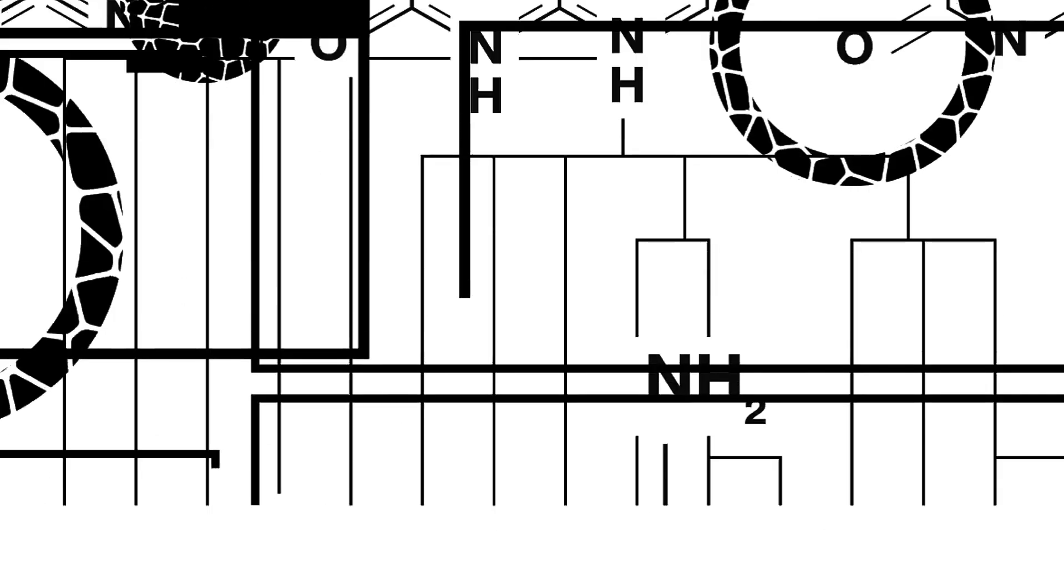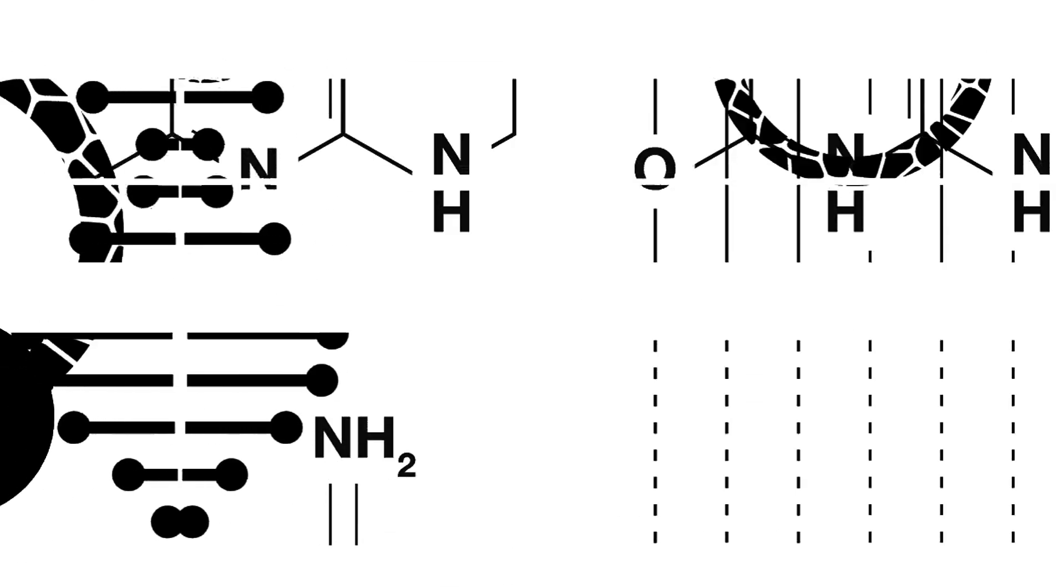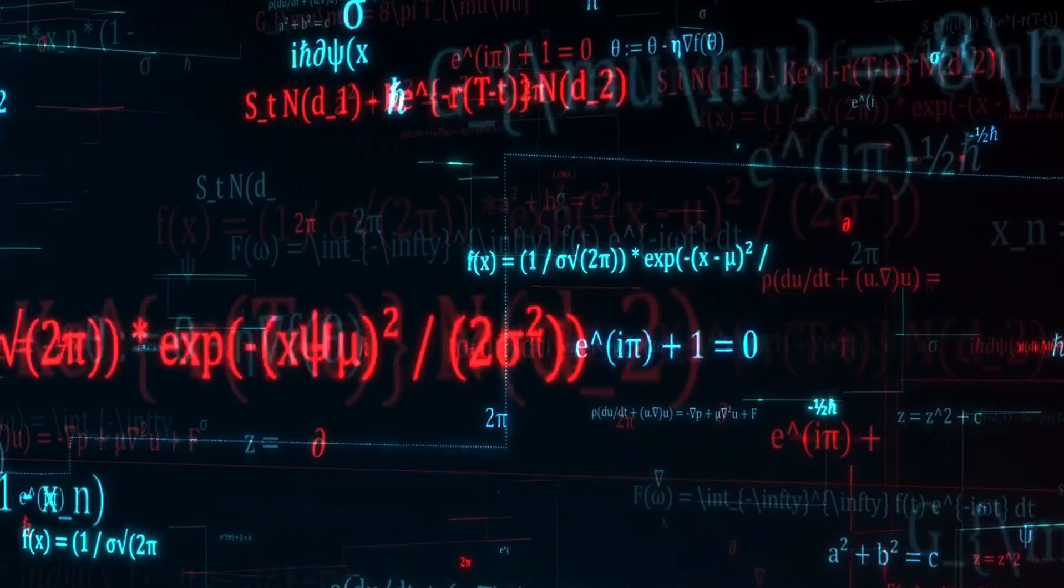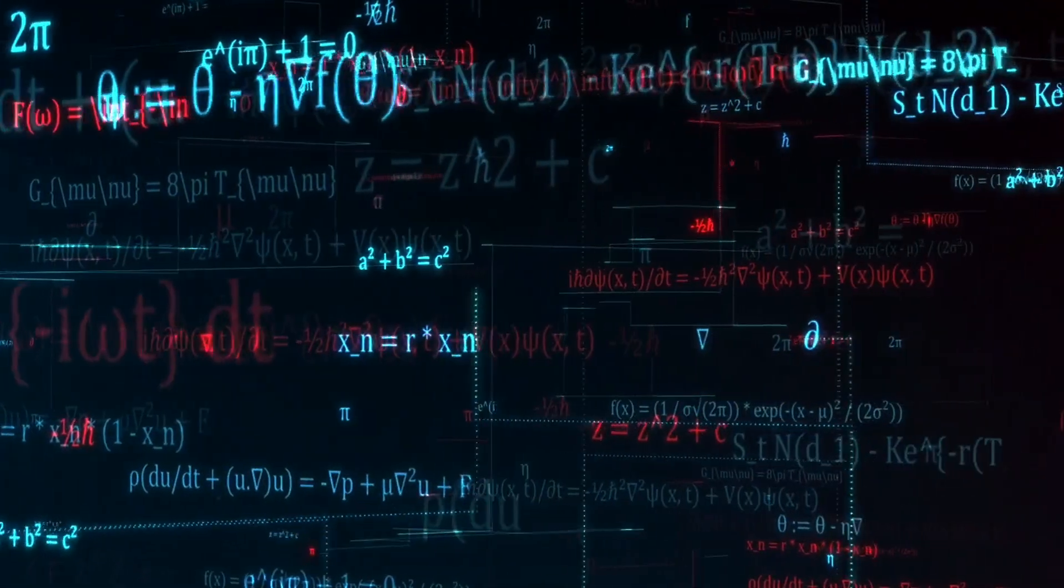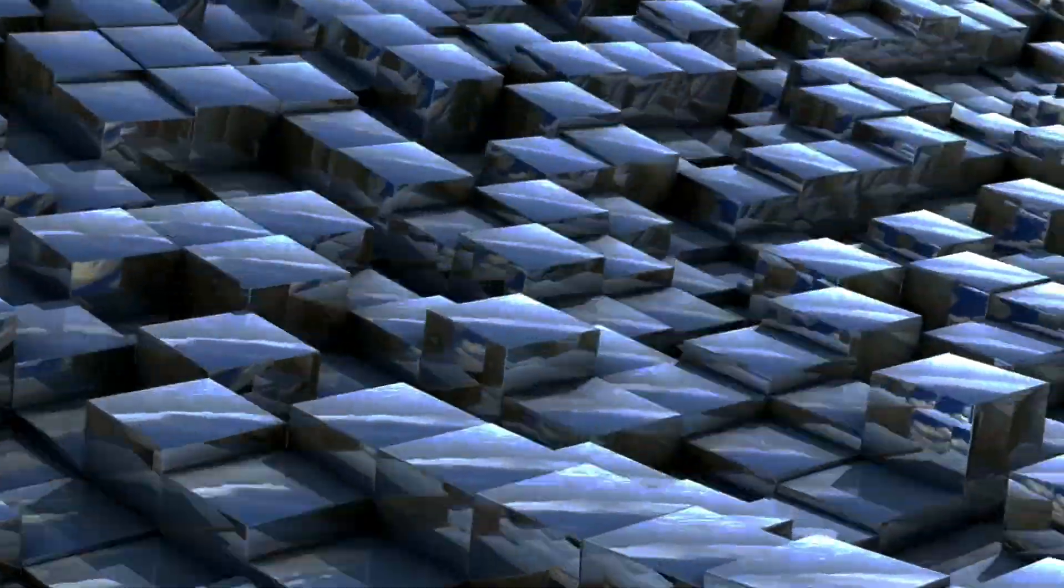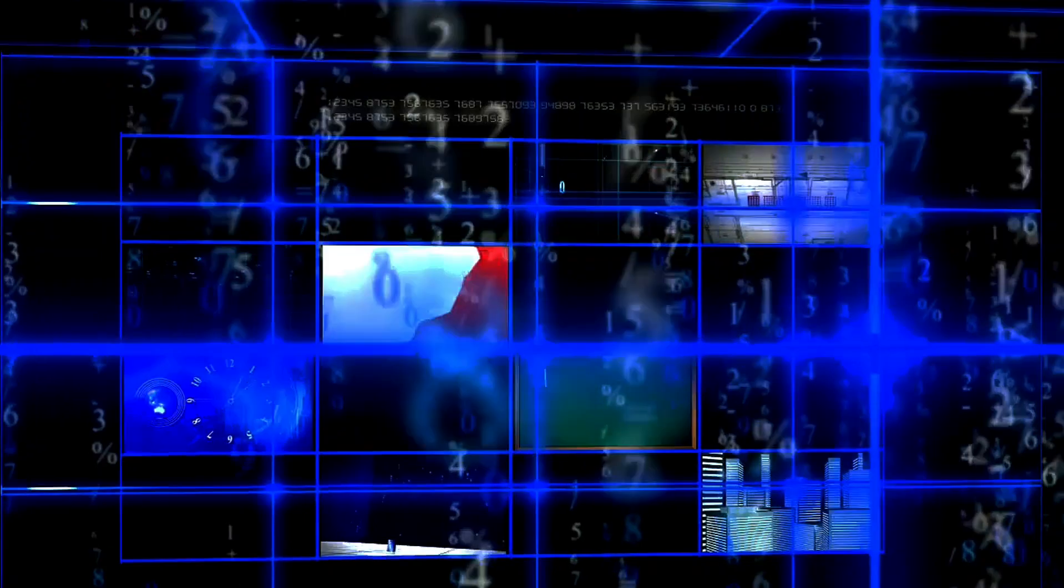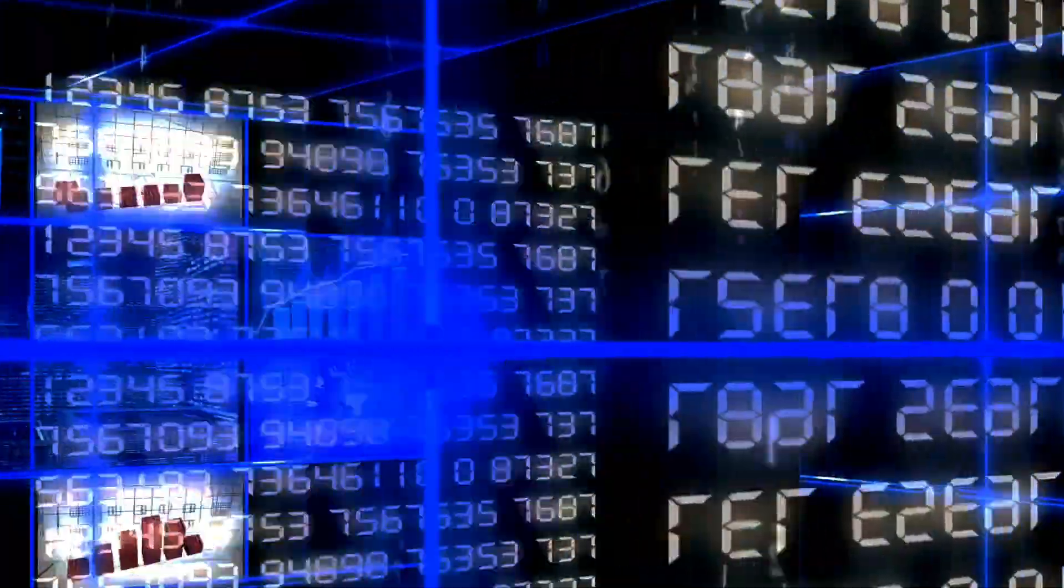For instance, consider the zeta function of a variety over a finite field. Here, the zeros correspond to eigenvalues of a Frobenius element acting on an etale cohomology group. Similarly, as we discussed in the previous scene, the zeros of the Selberg zeta function align with the eigenvalues of the Laplacian operator on a Riemann surface. Moreover, in the realm of p-adic zeta functions, the zeros are associated with eigenvectors of a Galois action on ideal class groups.